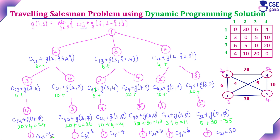Moving upward, we apply these computed values to the previous level functions. From vertex 2: 5 + 24 = 29, and 10 + 26 = 36. From vertex 3: 5 + 14 = 19, and 20 + 40 = 60. From vertex 4: 10 + 11 = 21, and 20 + 35 = 55.